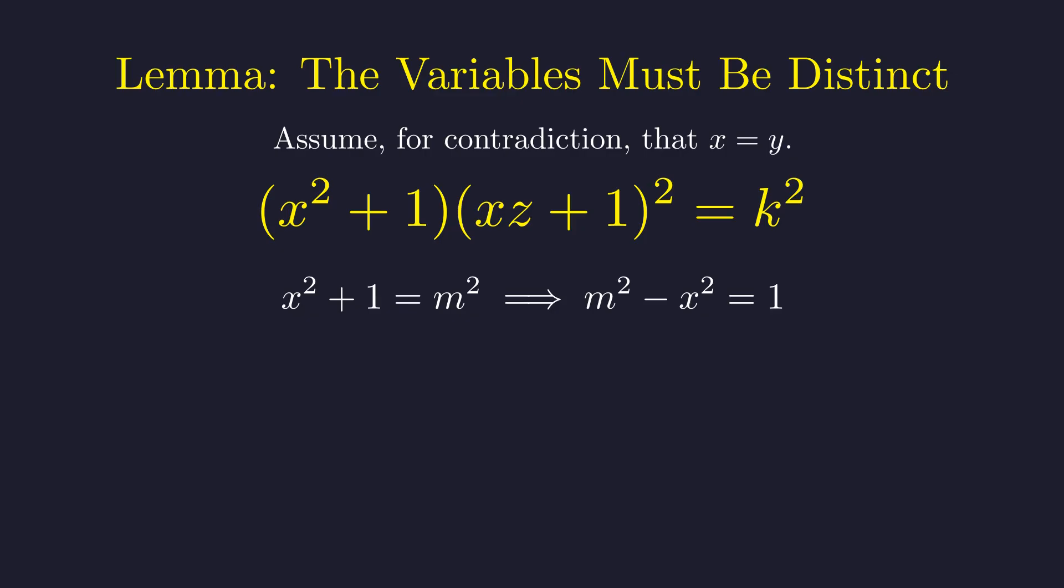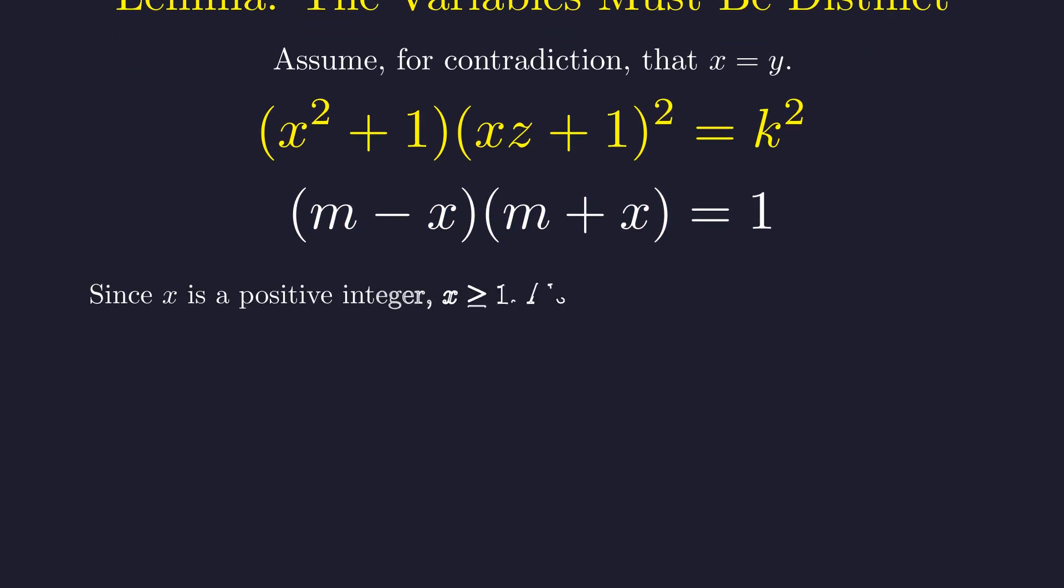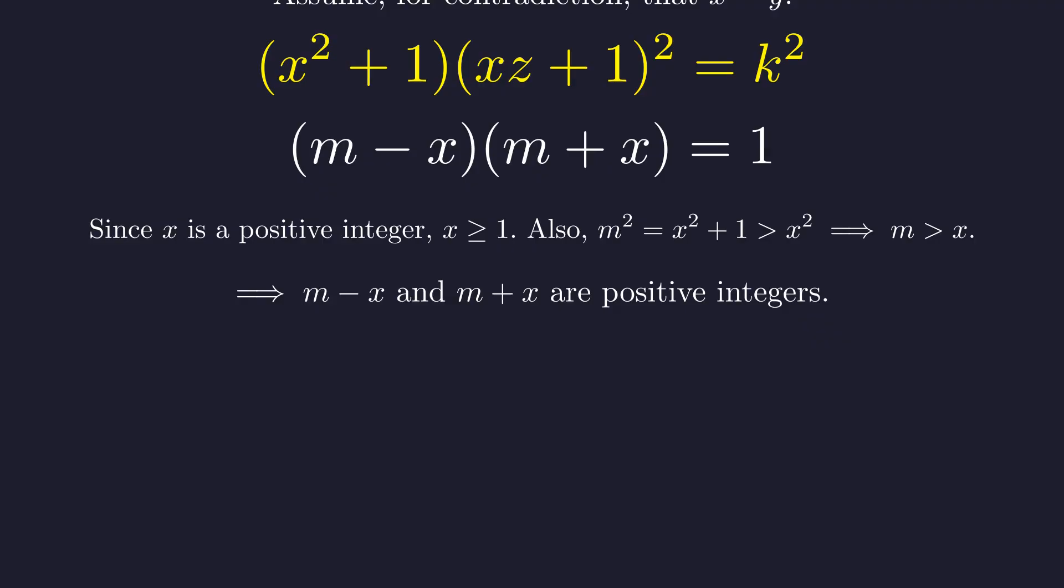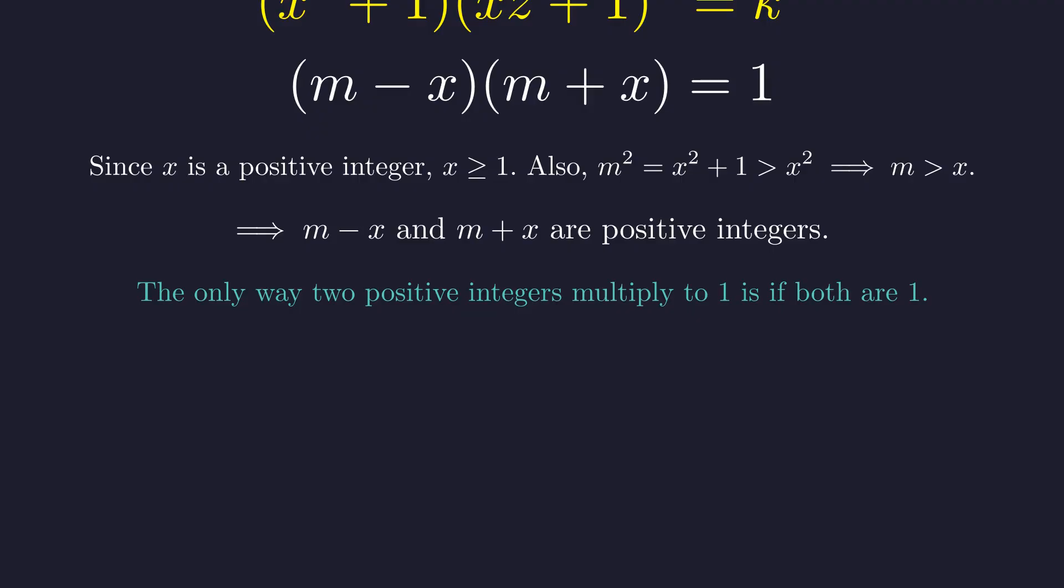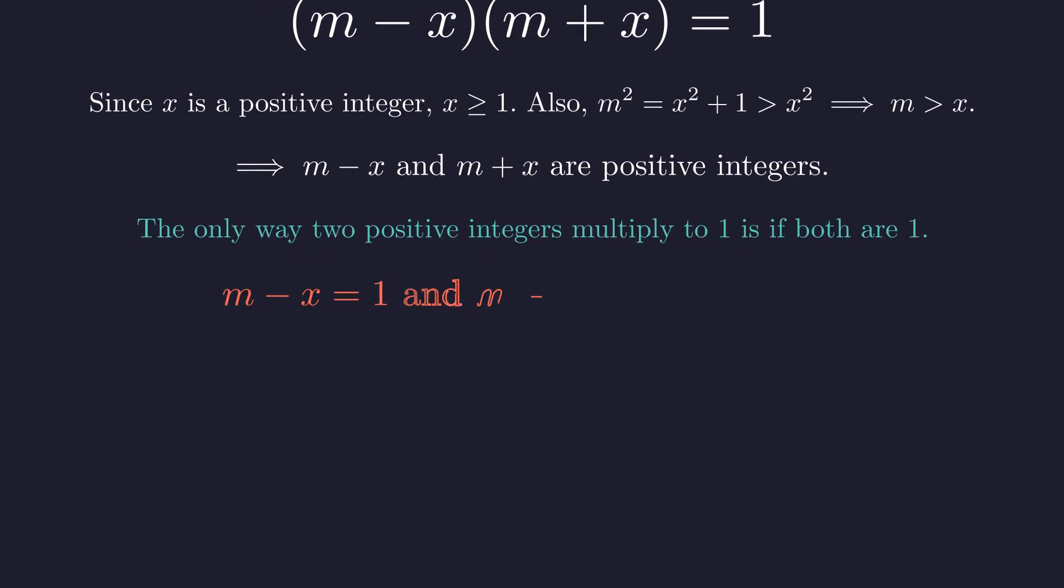So let's say x squared plus 1 equals m squared for some integer m. Rearranging this gives us m squared minus x squared equals 1. And this factors as a difference of squares: m minus x times m plus x equals 1. Now, since x is a positive integer, it's at least 1. And since m squared is bigger than x squared, we know m is bigger than x. This means both m minus x and m plus x are positive integers. But here's the thing. The only way two positive integers can multiply to give you one is if both of them are exactly 1. So we need m minus x to equal 1 and m plus x to equal 1. But that would mean x equals 0, which contradicts our assumption that x is positive.